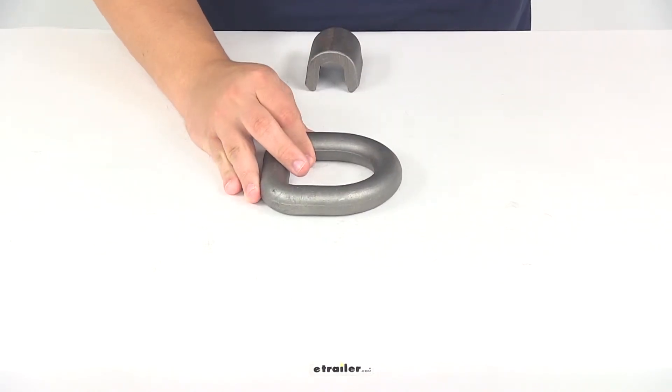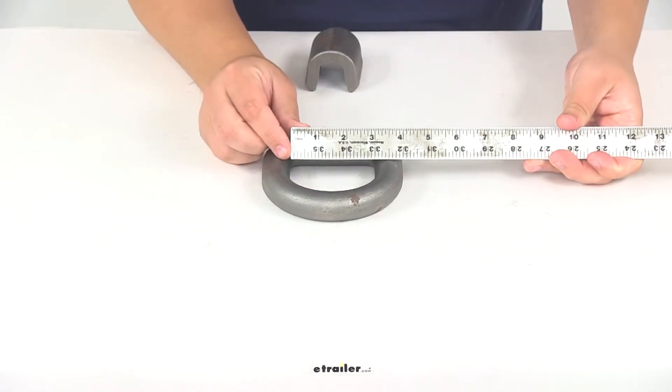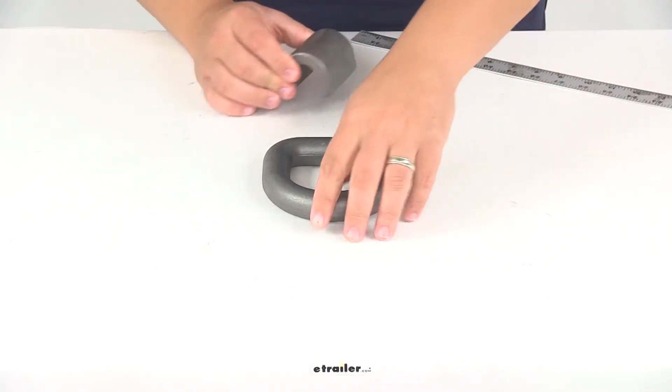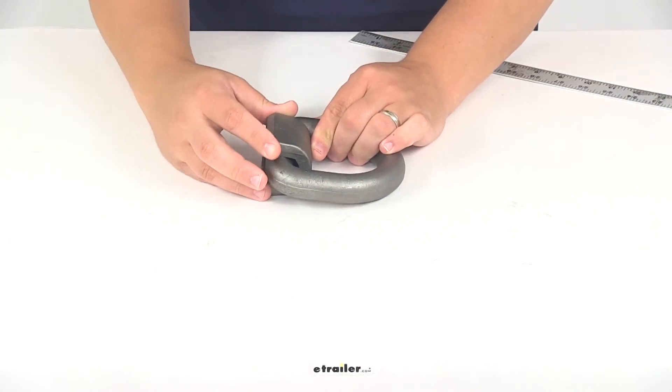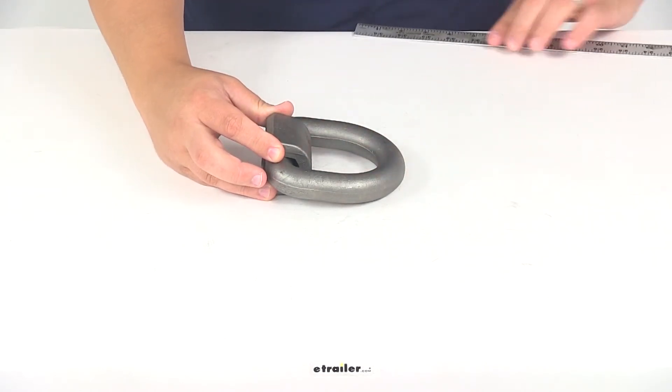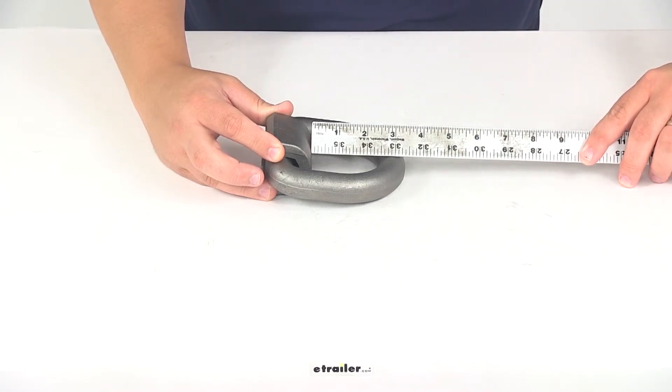The opening of the D-ring, inside edge to inside edge in this direction, is about two and seven-eighths of an inch. With the bracket on there, measuring from the top of the bracket to the bottom of the ring, that measurement is about two and five-sixteenths of an inch.